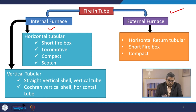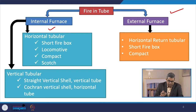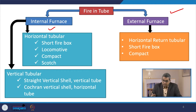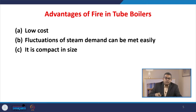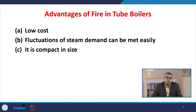Internal fired boilers include short firebox, locomotive type, compact in nature, and Scotch type. Vertical tube boilers include straight vertical shell and vertical tube types like Cochrane vertical shell and horizontal tube boiler. External fired boilers are of horizontal return tubular type, having a short firebox and very compact in nature. Advantages of fire-in-tube boilers include low cost, easy adaptation to steam demand fluctuations, and compact size.